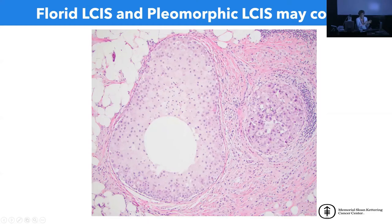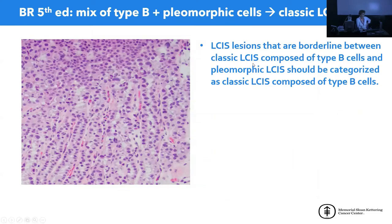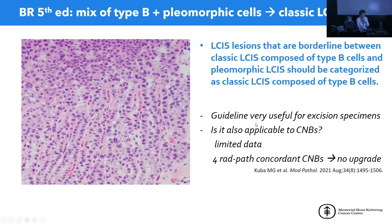The WHO has introduced useful guidelines for LCIS lesions borderline between classic LCIS with type B cells and scattered larger, more pleomorphic cells. They recommend categorizing such lesions as classical LCIS composed of type B cells — sometimes noting focal nuclear pleomorphism. This is very useful guidance for excision specimens. For example, if such a lesion is near a margin, it is considered classical LCIS and the margin is not reported.